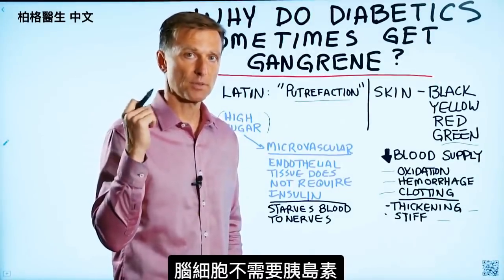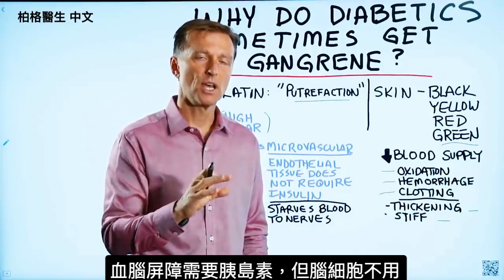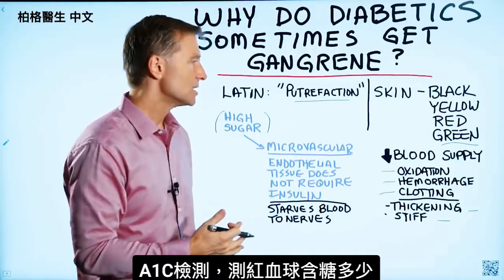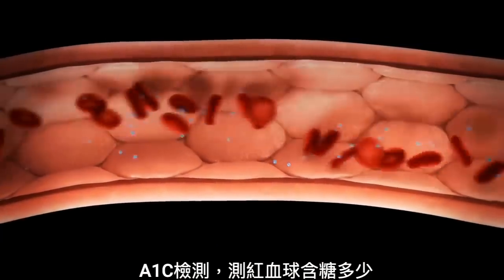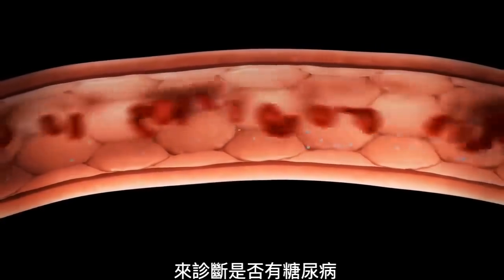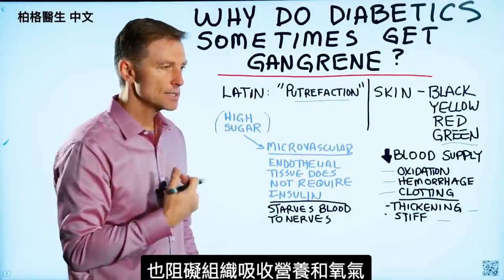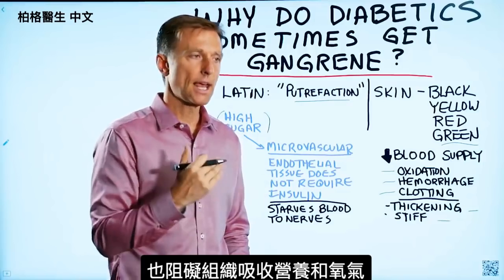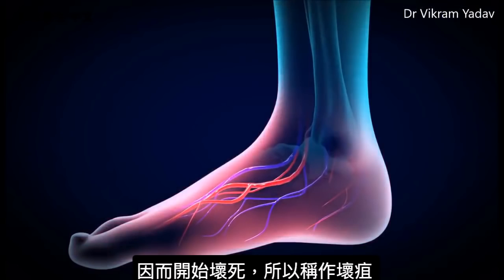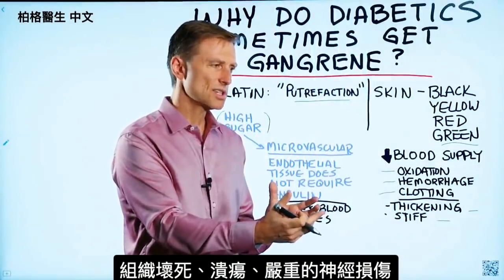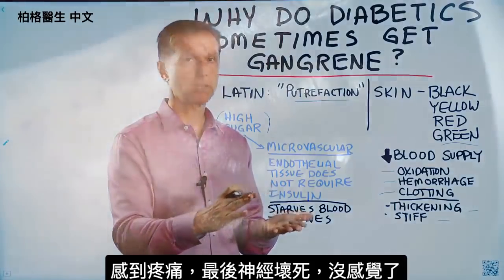The brain cells, for example, don't require insulin. You have the blood-brain barrier, which does, but not the actual brain cells. The red blood cells don't require insulin either. This is why when you get a test called A1C, they're measuring the amount of exposure of that sugar to the red blood cell to determine if you're diabetic or not. So the more sugar in the blood, the more vascular problems you're going to have, and that's going to stop the nutrition and oxygen to the tissues, and it's going to start dying — that's what's called gangrene. You have a combination of dead tissue, ulcers, and severe nerve damage. A lot of times there's pain involved until the nerve is dead, and then you have no pain — it's completely numb.